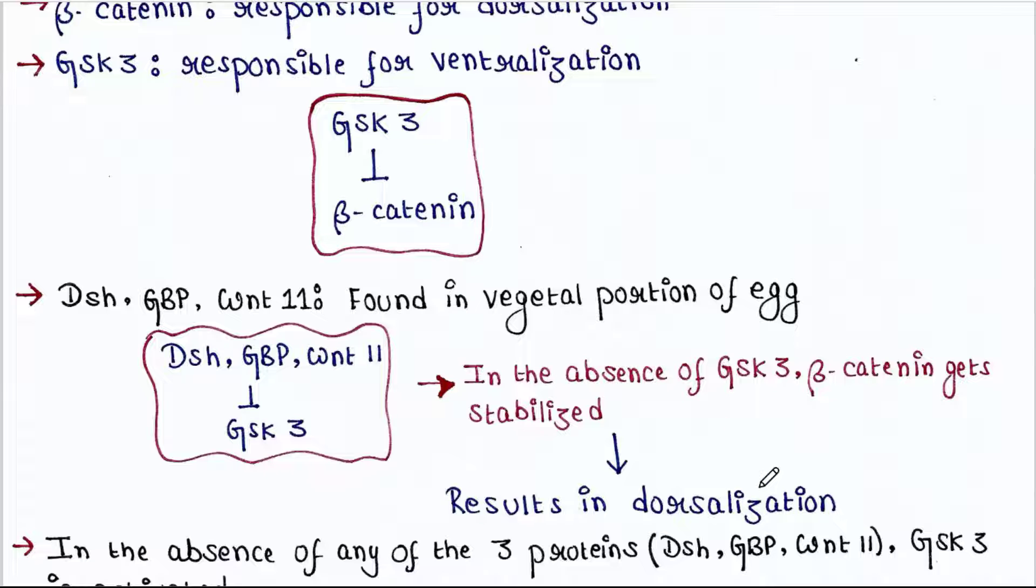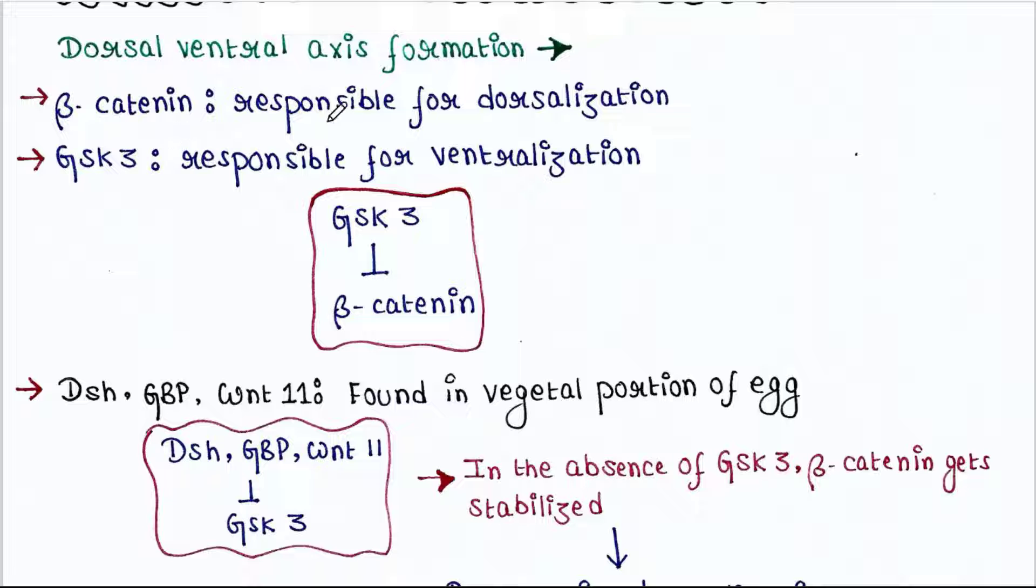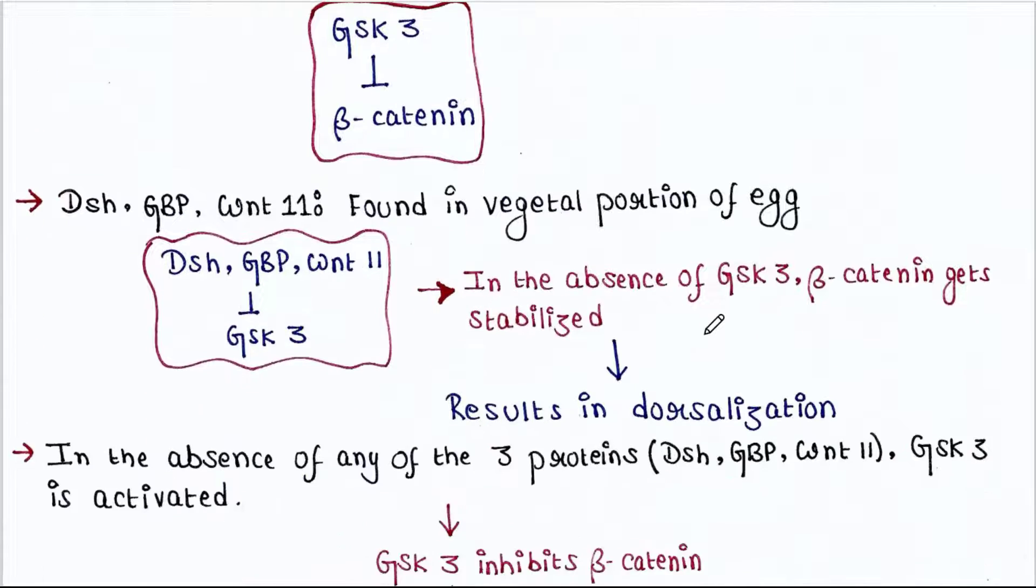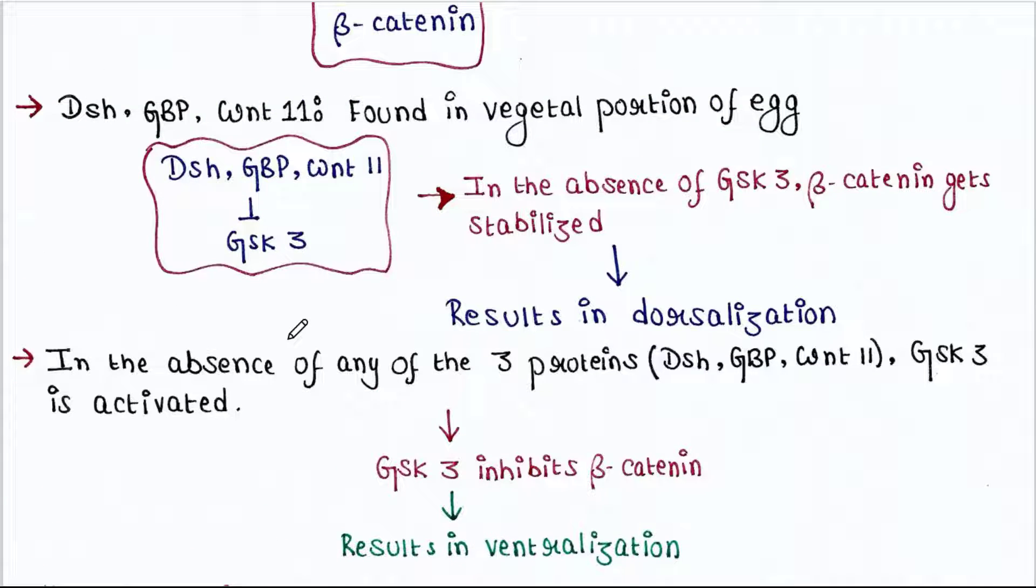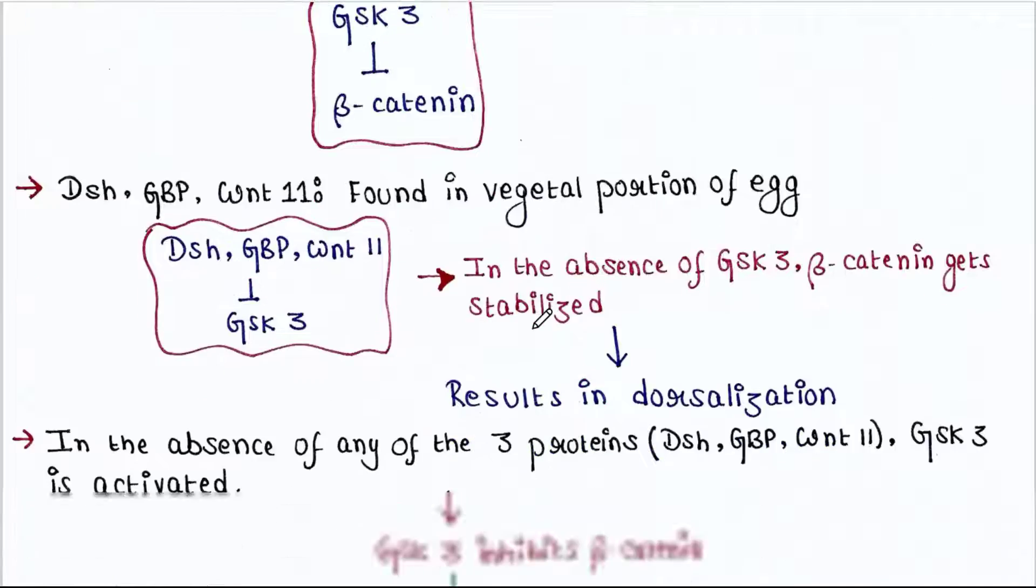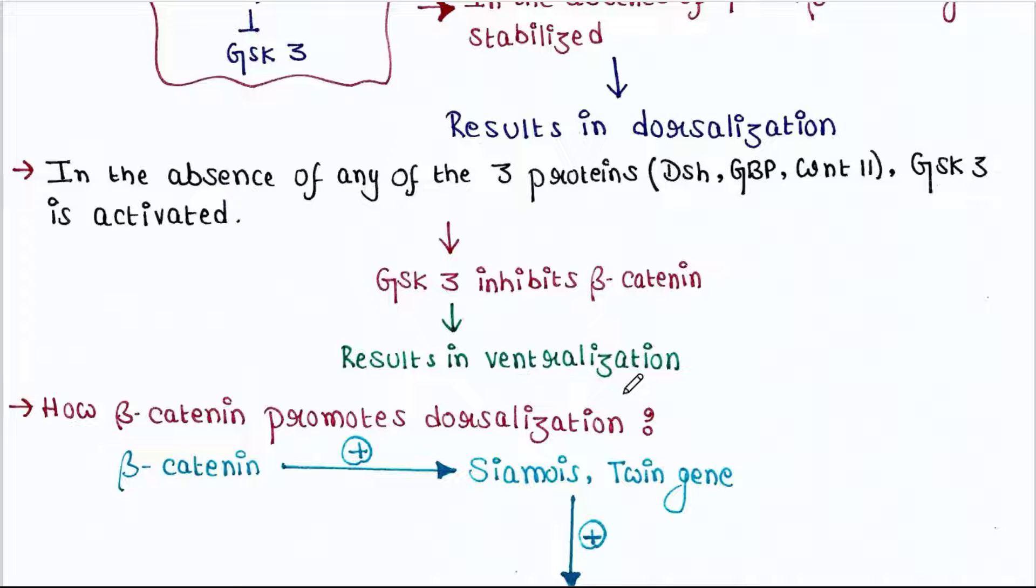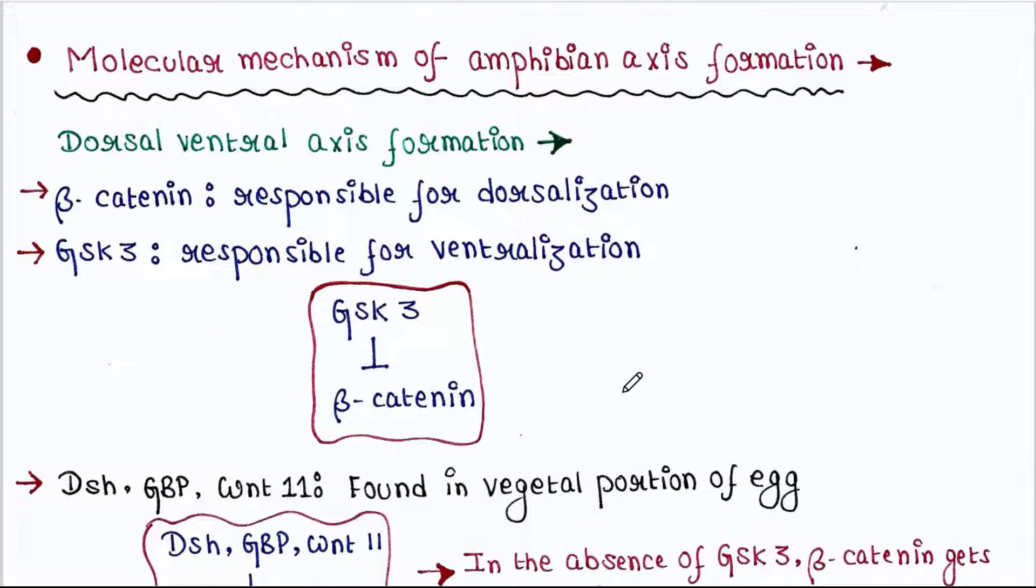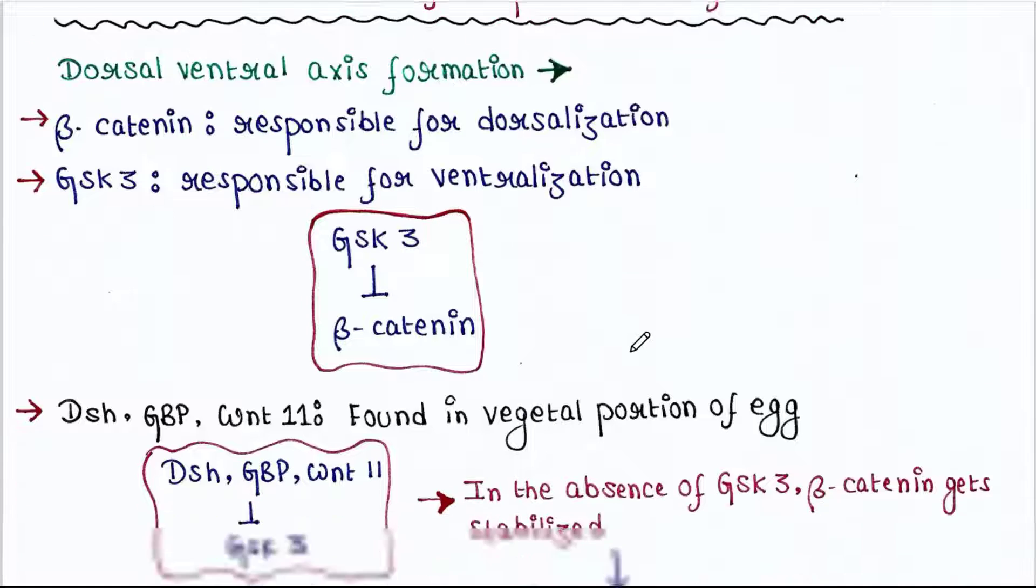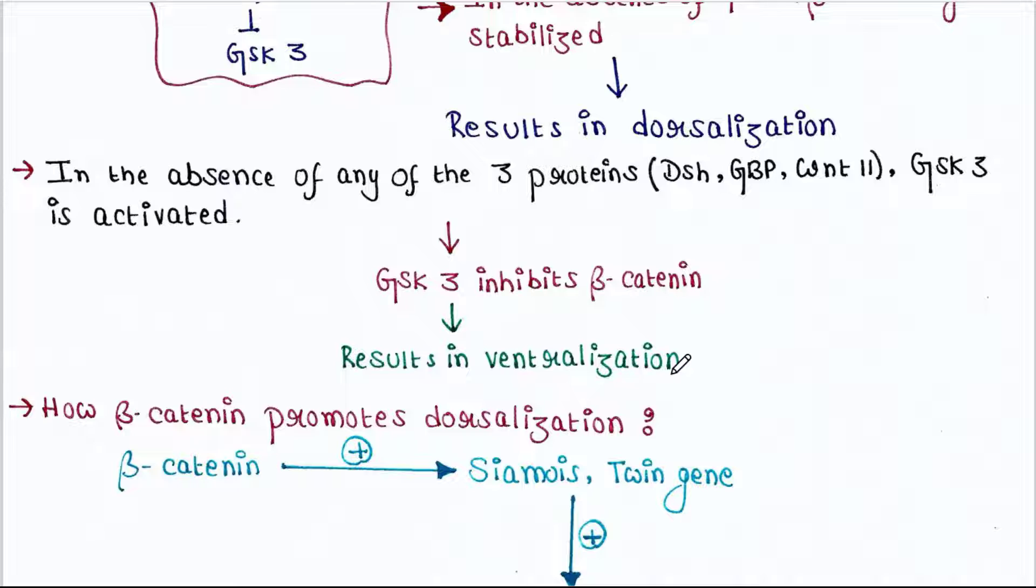In the absence of any of the three proteins like Dsh, GBP, and Wnt11, GSK3 is activated. When GSK3 is activated, it inhibits beta-catenin, which results in ventralization because beta-catenin is absent. When beta-catenin is absent, GSK3 will be responsible for ventralization.